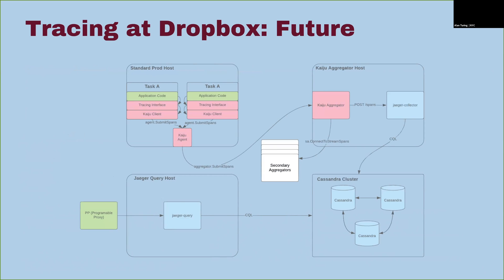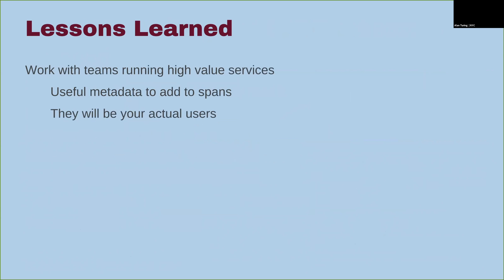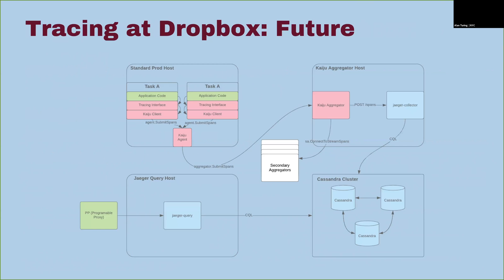Here's what Kaiju looks like. It acts as glue that would normally be the Jaeger agent talking to the Jaeger collector, but instead we replace it with our service framework. The application code calls into the tracing interface, and beyond that everything's opaque to the user. The Kaiju client buffers the data and periodically commits it to the agent, which then commits it to the aggregator, which saves it into Jaeger. There are also secondary aggregators as an extension point, which we use to provide streaming analysis and other tools that build on top of trace data — a convenient tap-off point beyond what Jaeger and Cassandra provide.